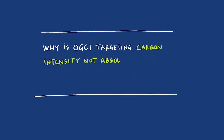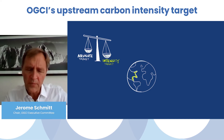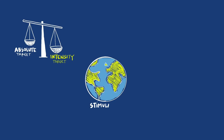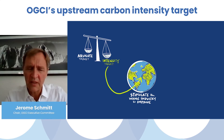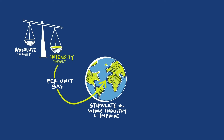Why is OGCI targeting carbon intensity and not absolute emissions? When we worked on this target, we asked ourselves, should we do it on an absolute basis or should we refer to an intensity-based target? Some of our stakeholders were asking us to work on the basis of an absolute target, and some others told us that our role was not only to keep improving and emulating each other, but as well to stimulate the whole industry to improve. Hence the fact that we decided to use a carbon intensity reduction target, which means reducing emissions on a per unit of energy produced.